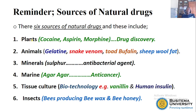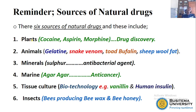We have frogs providing us with drugs such as bufalin. We have sheep providing us with wool fat, pigs providing insulin. Then we have minerals such as sulfur which are bacteriostatic. We have marine sources such as the green algae and red algae providing us agar-agar that we use to treat cancer. Then we have insects such as honey bees providing us with wax and honey which are also antibacterial. Lastly, we talked of tissue culture such as the use of biotechnology and DNA recombinants.